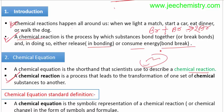A chemical reaction is also defined as a process that leads to the transfer of one set of chemical substances to another. For example, if A reacts with B, a chemical reaction happens between them and the final product C is formed. So one set of substances is transformed into another set under the chemical reaction.